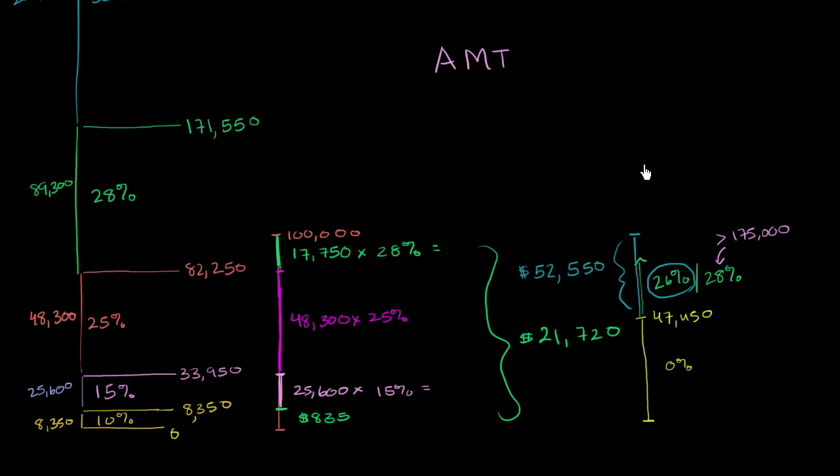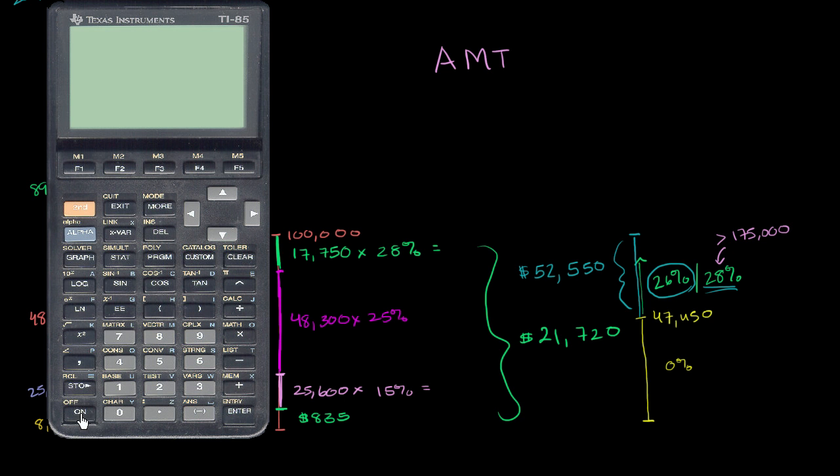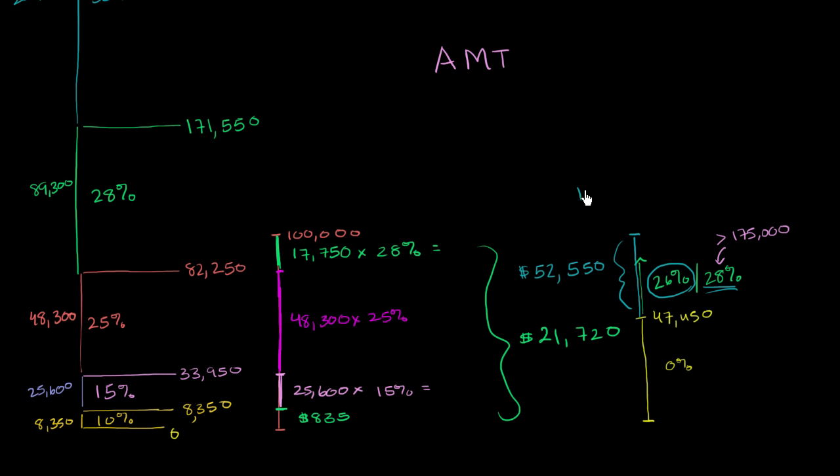And if the person made over $300,000, they would have to use the 28%. And this exemption would disappear. But once again, let's not overcomplicate it. Let's just focus on this person. So this person has to pay 26% of $52,550, which would be 0.26 times $52,550 gives $13,663. So $13,663, that is equal to $52,550 times 26%.